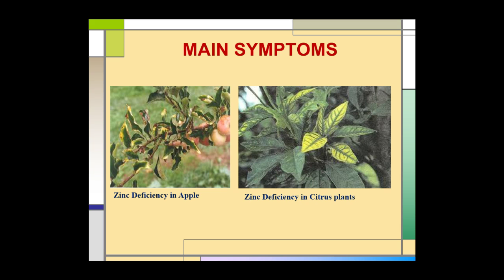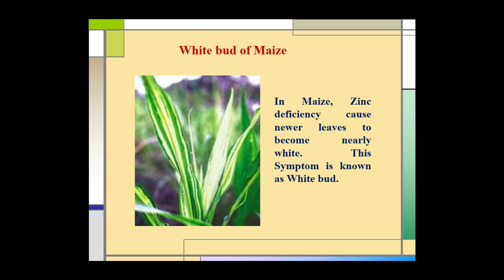The picture shows the deficiency symptoms of zinc. In zinc deficiency in apple, the leaves are chlorotic and bronze-colored spots develop on the leaves. In zinc deficiency in citrus plants, the leaves show chlorosis. In maize, zinc deficiency causes newer leaves to become nearly white, and this symptom is known as white bud.